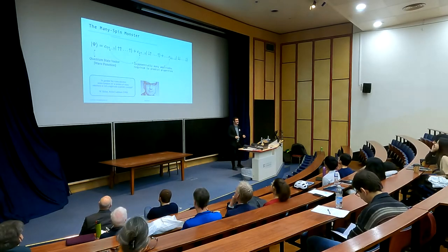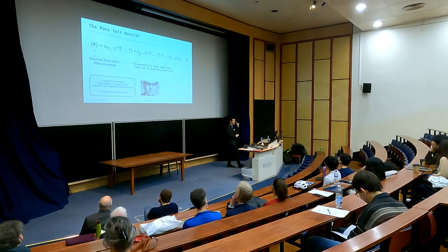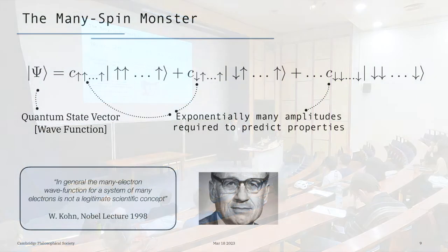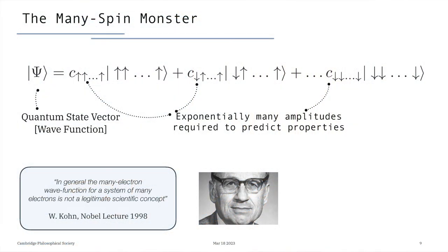Things become even more demanding — to the level that you have a sort of monster — when you have a system with many spins. If I have n electron spins, to fully describe the quantum system, you must know 2-to-the-power-of-n possible quantum amplitudes. So we have this combinatorial explosion of possibilities, and we represent the properties of this quantum system with a vector we call the quantum state vector or wave function, whose coefficients are the quantum amplitudes.